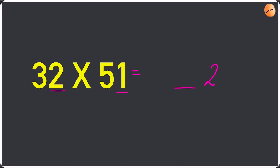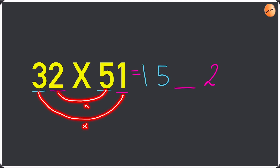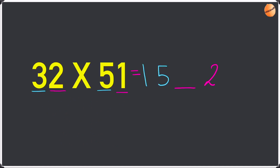Multiply the first digit of both the numbers — 3 times 5 is 15, so write the 15. Now find the number that goes in the middle. Multiply the numbers like this: 2 times 5 and then 3 times 1. 2 times 5 is 10, and 3 times 1 is 3. 10 plus 3 is 13. So write the 3 and take the 1 as a remainder.